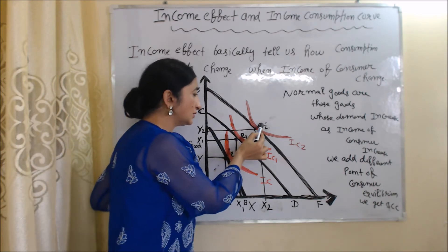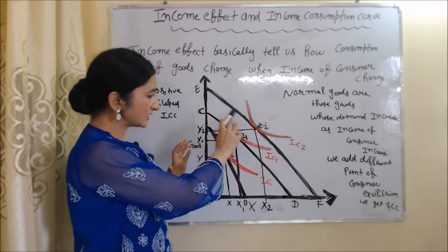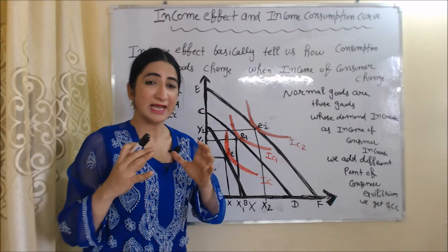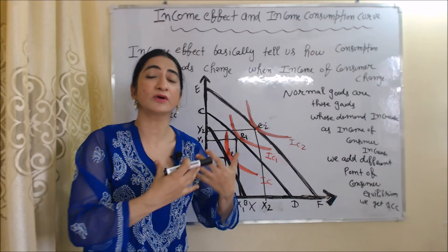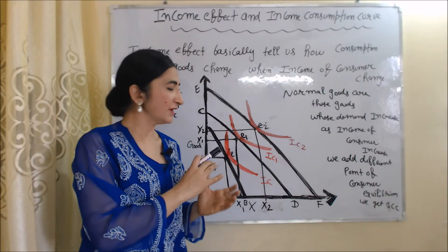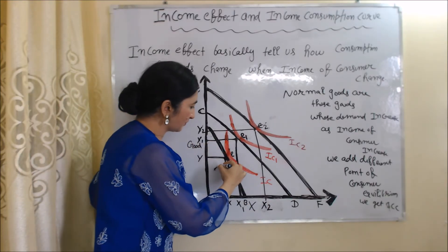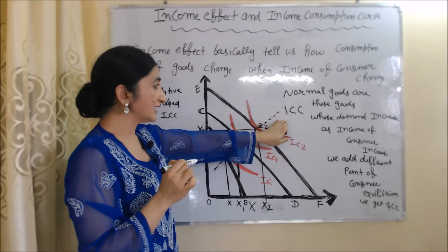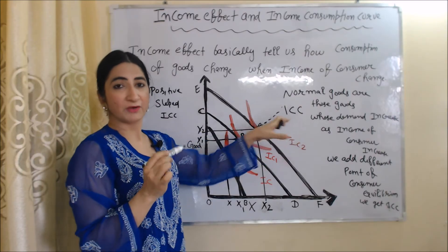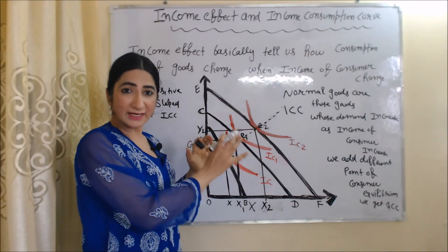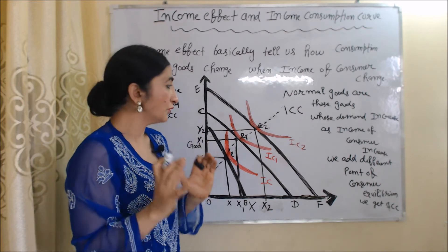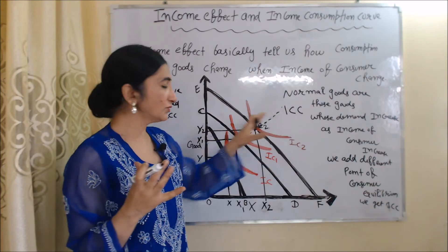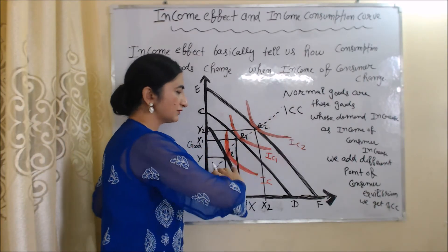These movements show how consumption of goods changes as income changes — and this is our income effect. When we join all the equilibrium points E, E1, and E2, we get our ICC — the income consumption curve. You can see the slope of this income consumption curve is positive, so it is called a positively sloped income consumption curve.